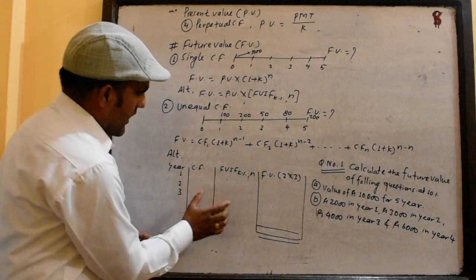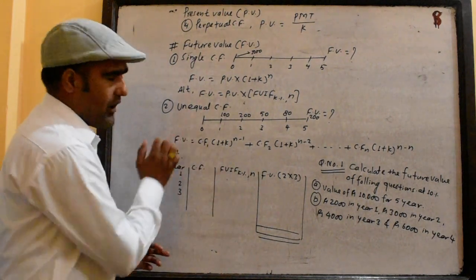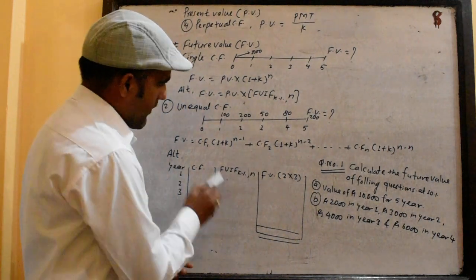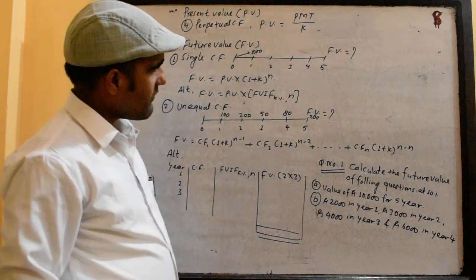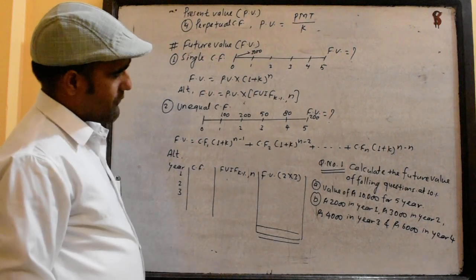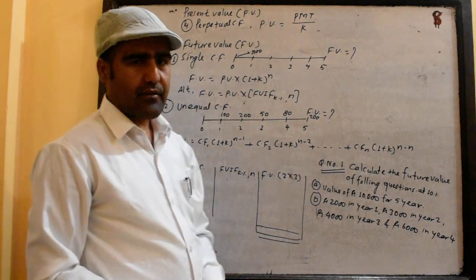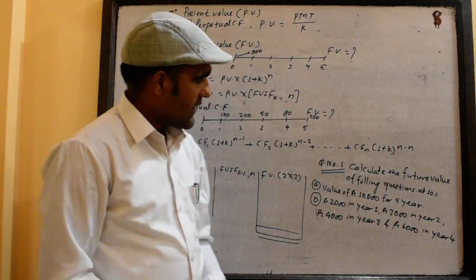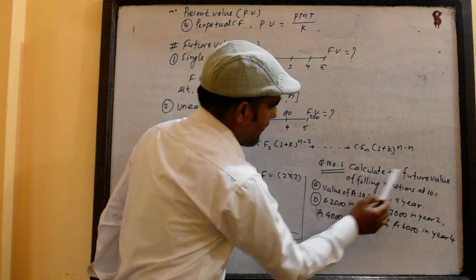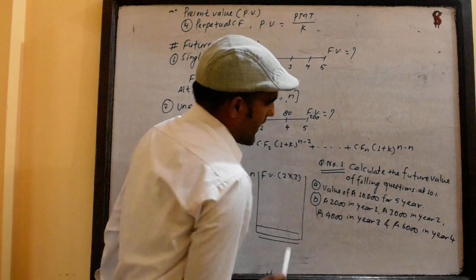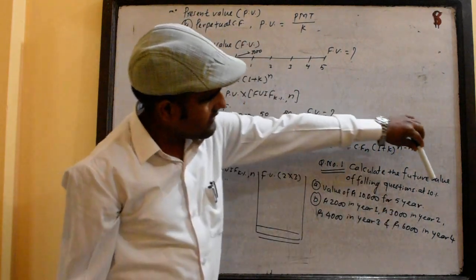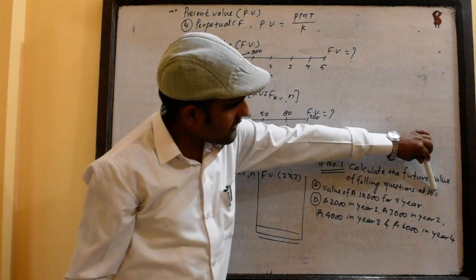Sorry, this is the table. The formula is not appropriate, but the table is not wrong. This is the humanika. If you have a big question, please calculate the future value of following questions at the 10% interest rate.